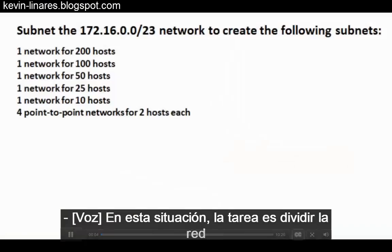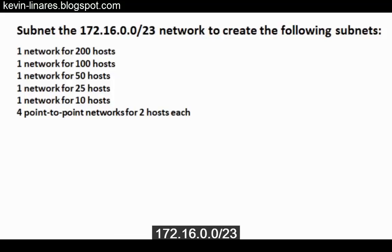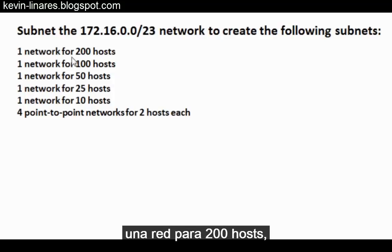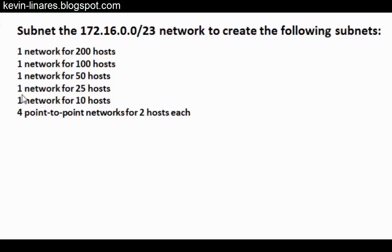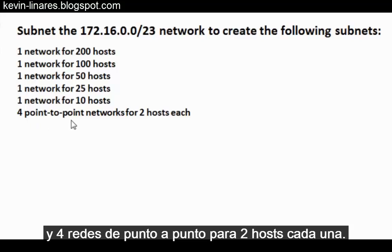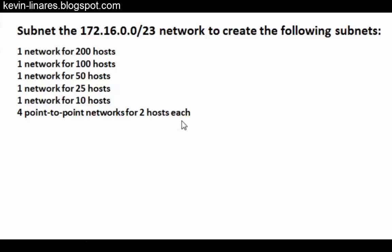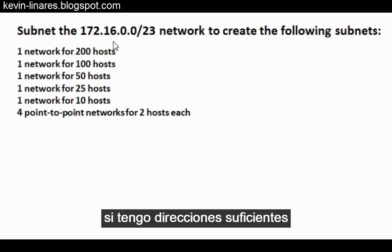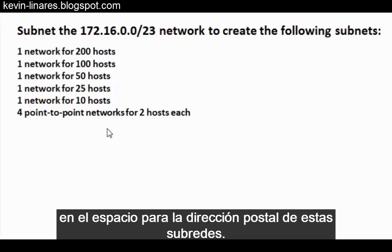In this scenario, the task is to subnet the 172.16.0.0/23 network to create the following subnets: one network for 200 hosts, one network for 100 hosts, one network for 50 hosts, one network for 25 hosts, one network for 10 hosts, and four point-to-point networks for two hosts each. Before I begin to create these subnets, I need to check to see if I even have enough addresses in this address space to create all of these subnets.